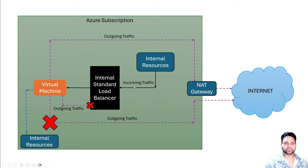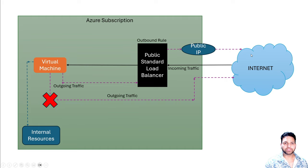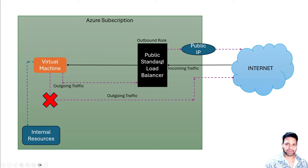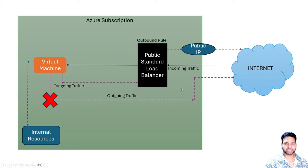Those are the two options when using the internal load balancer. If you have a public standard load balancer, the incoming traffic is fine because the public standard load balancer has a public IP and internet traffic comes through that public IP, then the load balancer distributes it to the virtual machine. However, the default outbound routes are still blocked, so you have to configure an outbound rule where outgoing traffic from the virtual machine goes through the public IP of the standard load balancer towards the internet.